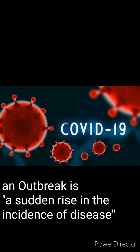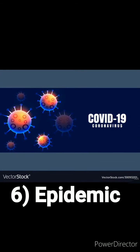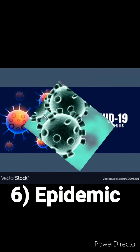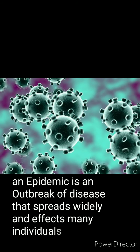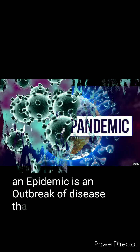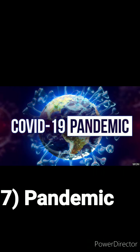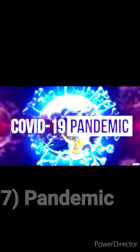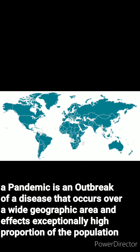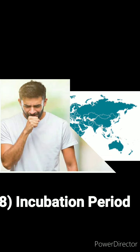Jho bade paimane par phehilne lage. And next is epidemic — jisai Hindi mein mahamari kaha jata hai. Jab koi disease outbreak ho kar bahut saray logon ko infected karne lagta hai, toh use epidemic kehte hai. Or pandemic isi ka bada roop hai, jo vishwik vyaapi ho sakta hai, bade paimane par logon ko infected kare, pure world mein.